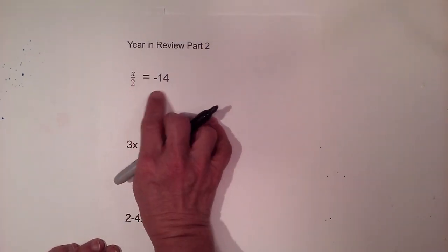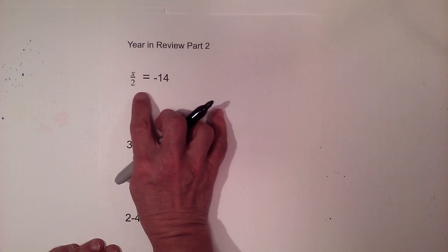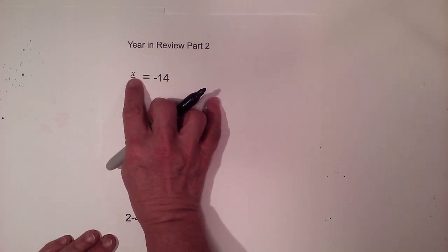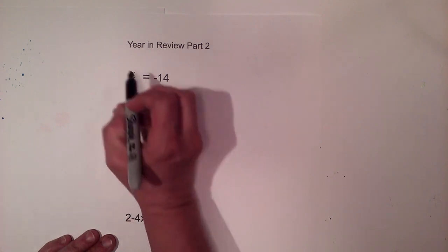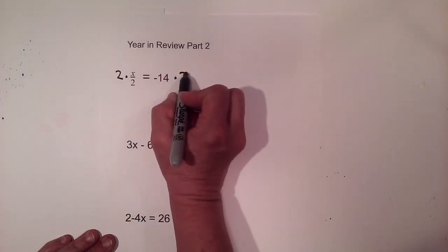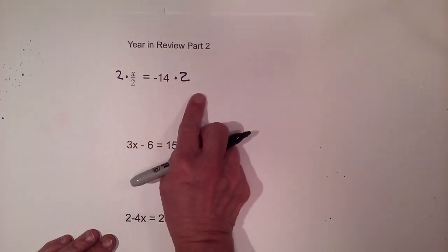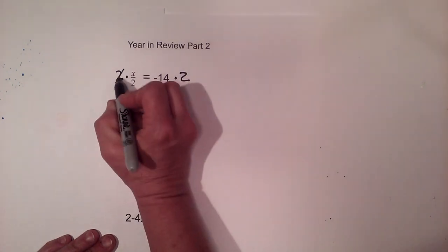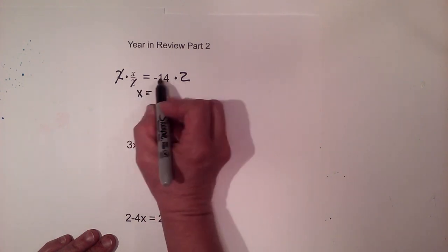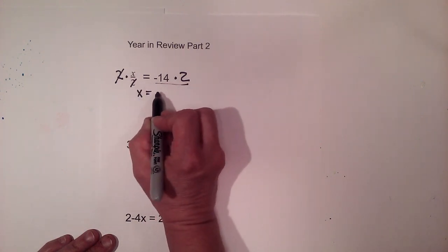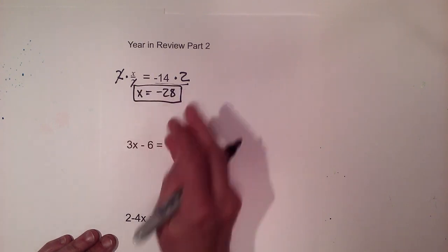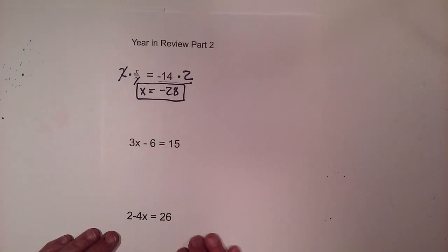We have x over two is equal to negative fourteen. When we're dividing a variable, we need to do the opposite operation, so we're going to multiply by two on both sides. The twos cancel and we're left with x, so x is equal to negative twenty-eight. That's how we handle division.